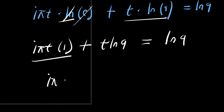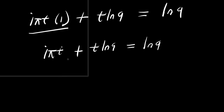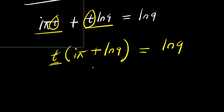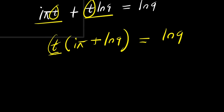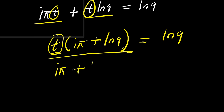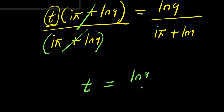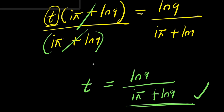So we have i·π·t plus t·ln(9) equals ln(9). There is a t in both terms, so we factor that out: t times (i·π + ln(9)) equals ln(9). To isolate t, we divide both sides by (i·π + ln(9)), which cancels on the left side, giving us t equals ln(9) divided by (i·π + ln(9)). This is our solution using the first method.